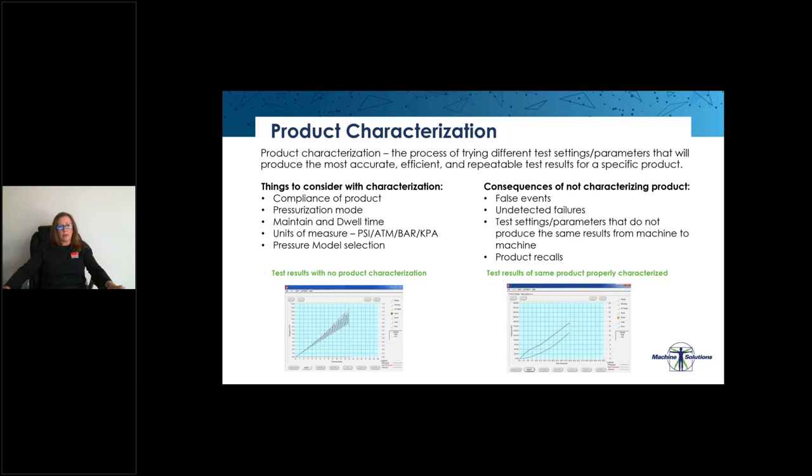I've talked a lot today about testing products and what parameters to use, which leads me to something that we call product characterization. Product characterization is the process of trying different test settings and parameters that will produce the most accurate, efficient, and repeatable test results for a specific product.